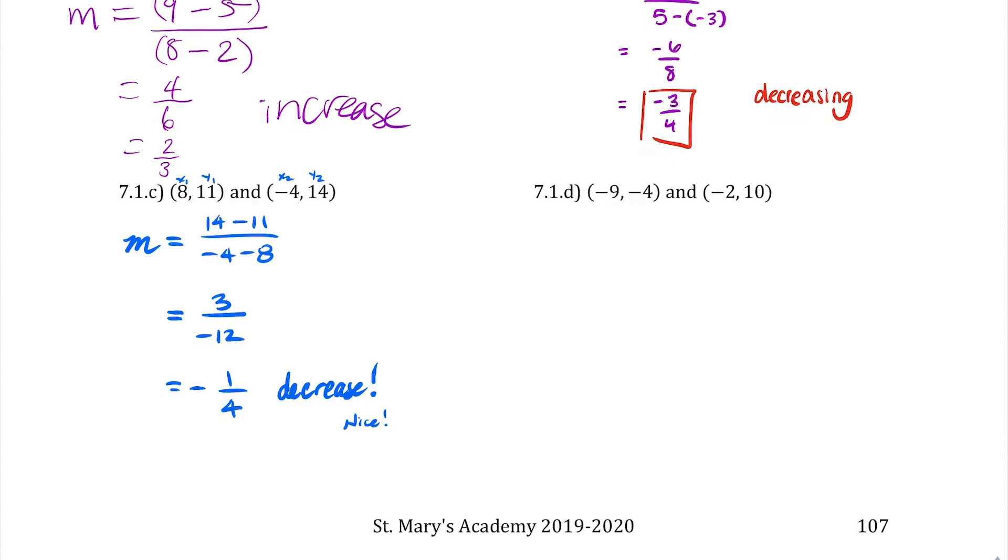Okay, last example. So, label your points if you want, and then plug in and solve. By now, hopefully this seems easy and straightforward to you. Okay, remember that when you have that double negative here and here, you want to always change that to adding, common mistake that I see all the time. So, there's our reduced answer. And because it's positive, we have an increase.